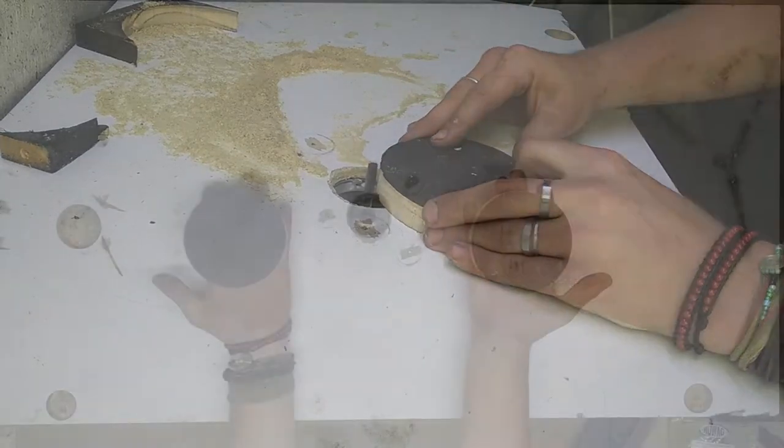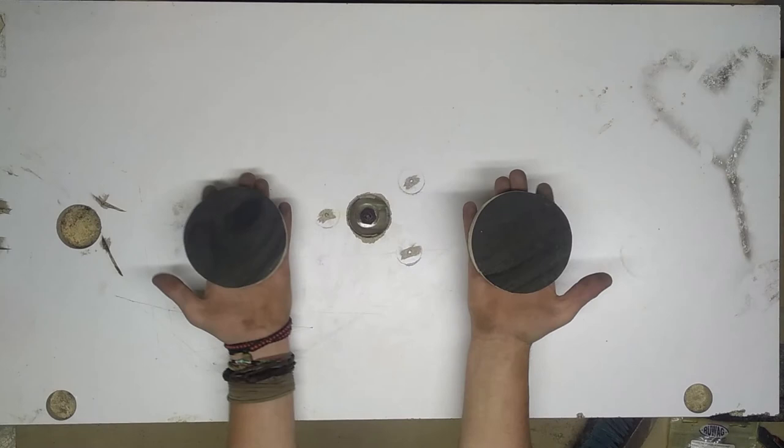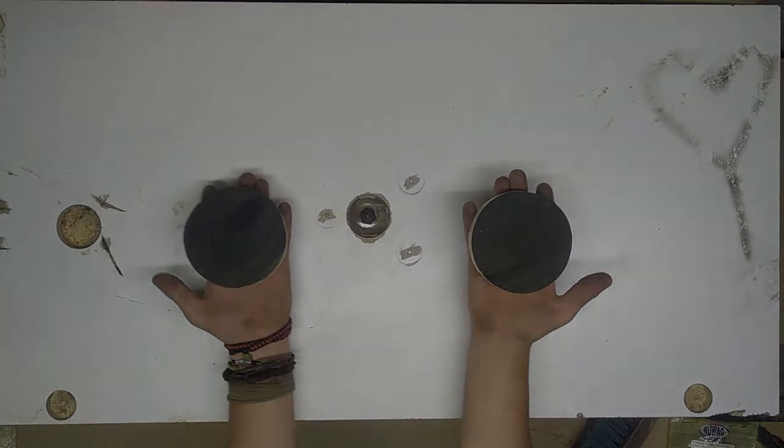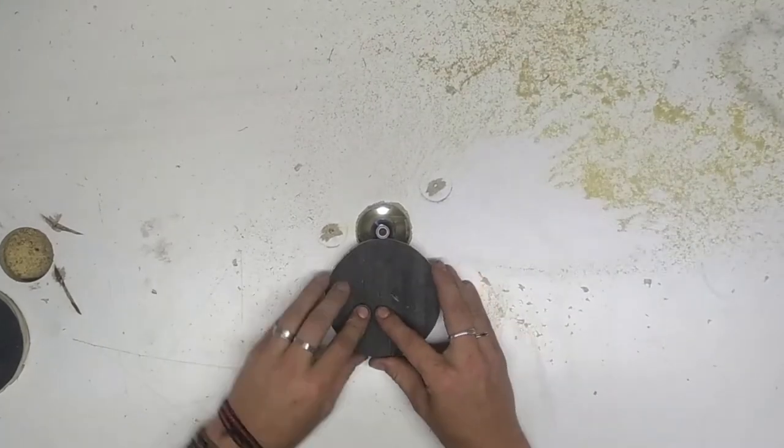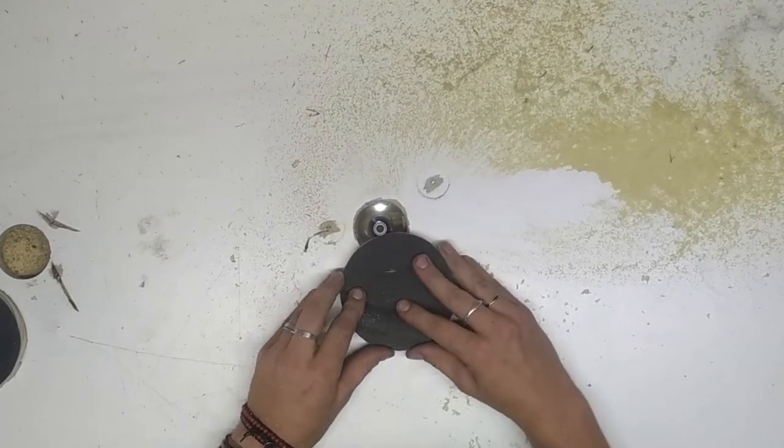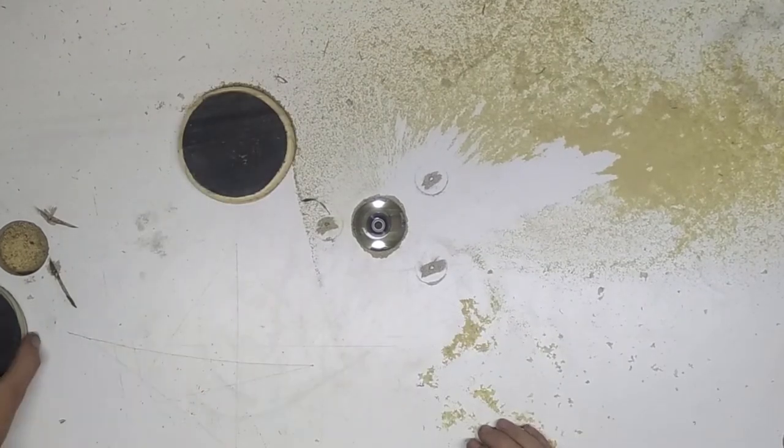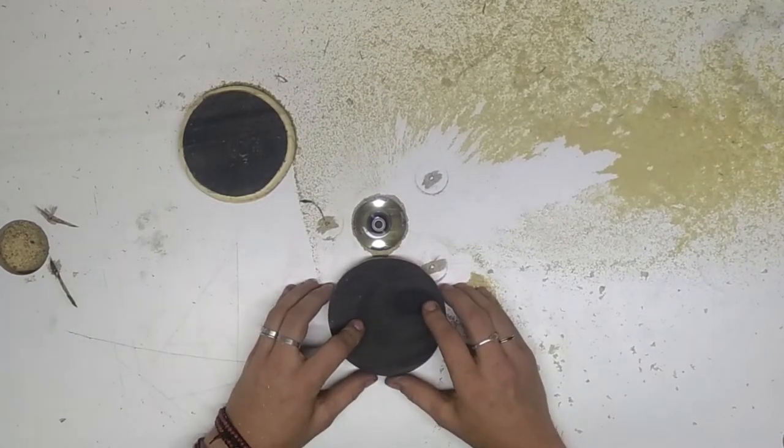And there we go. We've got our two cut outs, one for the top and one for the bottom. The next thing we did was put an edging blade onto the router just to give a nice contour to the top and bottom sections of our new backflow burner.